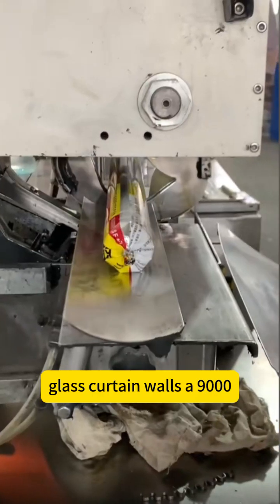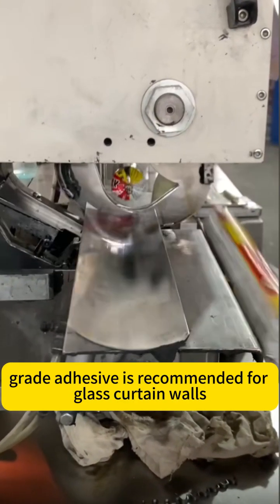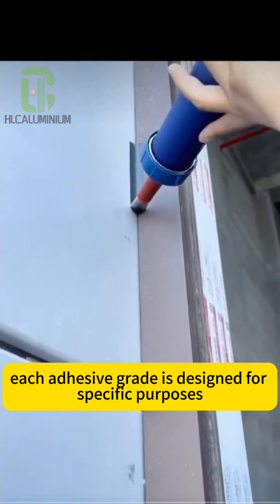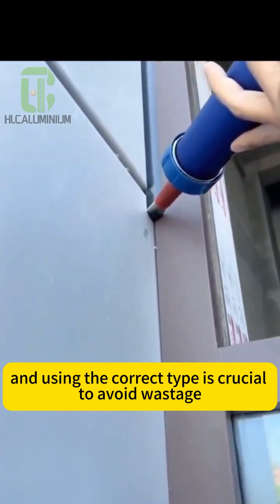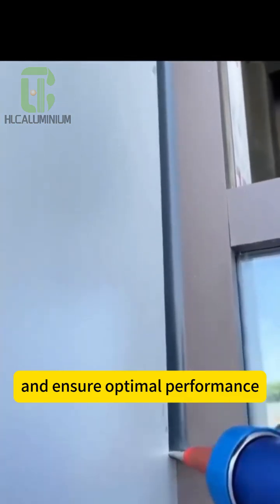For glass curtain walls, a 9000-grade adhesive is recommended. Each adhesive grade is designed for specific purposes, and using the correct type is crucial to avoid wastage and ensure optimal performance.